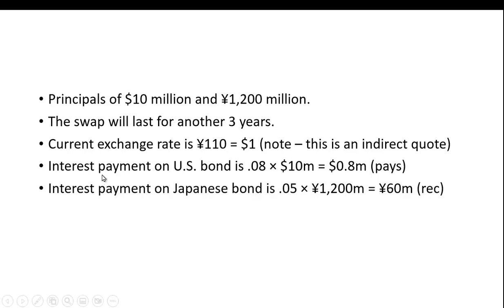The institution receives 8% on the 10 million dollar US bond, so they receive 0.8 million dollars, or 800,000 per year — that's what they're paying. They also receive 5% on the 1.2 billion yen Japanese investment, which works out to 60 million yen per year.